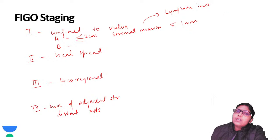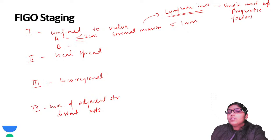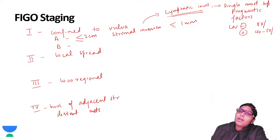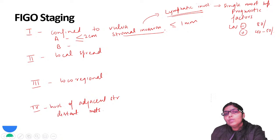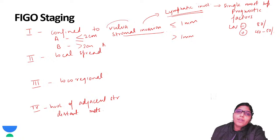Lymphatic involvement is the single most important prognostic factor in CA vulva. If a patient is lymph node negative, survival can be as high as 80%. If lymph nodes are positive, survival drops to 40-50%. This is why lymphatic involvement - determined by stromal invasion - is so critical, and why biopsy must include the dermis to assess stromal invasion depth.